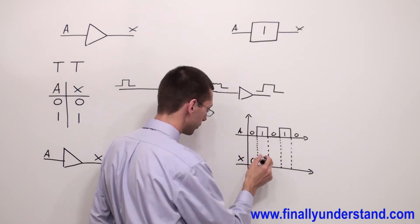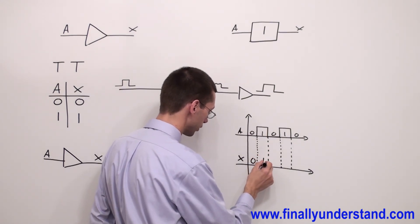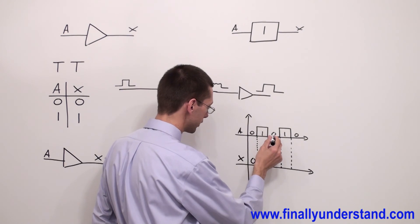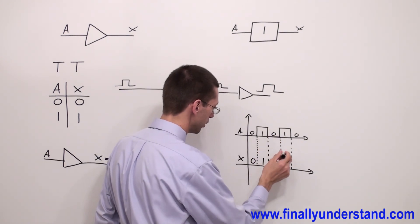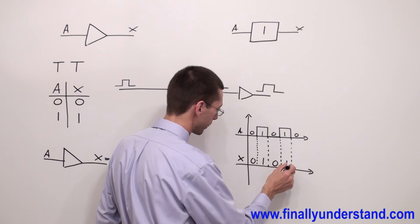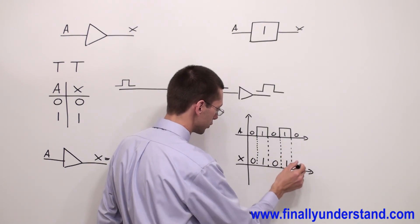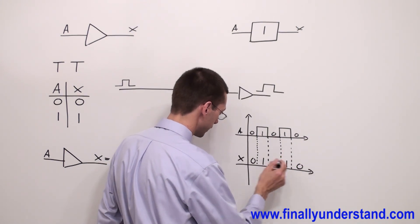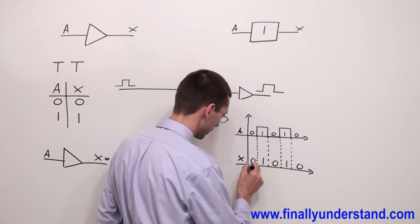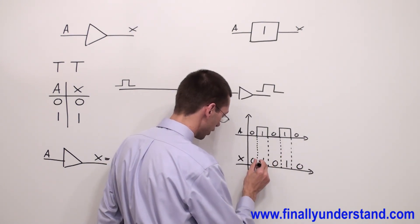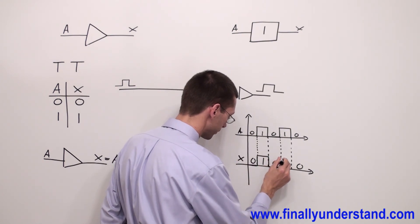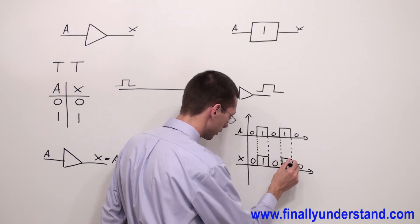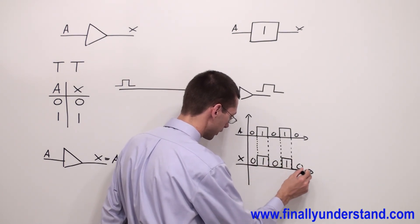According to the truth table, any time I have 1 at the input, output is going to be also 1. 0 at the input, output is going to be 0. 1 at the input, output is going to be also 1, and so on. This is my output waveform for this gate.